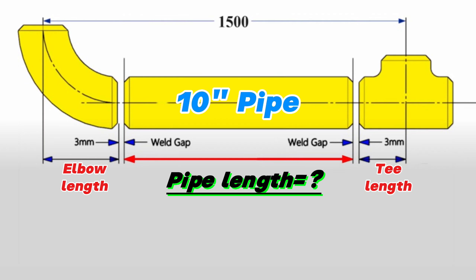For this, we must first find the 90-degree butt weld elbow and equal tee lengths. Then, if we subtract the lengths of the elbow and equal tee from the total length, we can find the length of the 10-inch pipe piece.